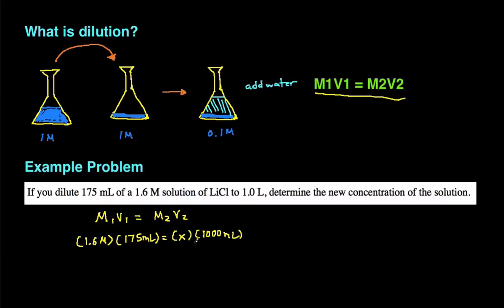Then we just use algebra and solve for the unknown. So we divide both sides by 1,000 milliliters. And that way the milliliters cancel each other out, leaving you X equals 0.28 molar. So that means originally the concentration was 1.6 molar and then after diluting it to one liter, it turned into 0.28 molar.